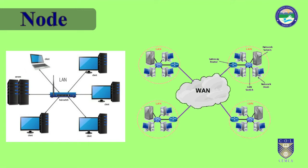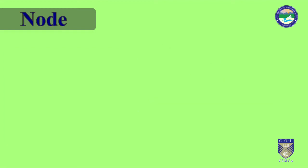Note that a hub constitutes a physical network node but does not constitute a LAN network node, since a hub network logically is a bus network. Analogously, a repeater or PSTN modem with serial interface is a physical network node but not a LAN node. If the network in question is the internet or intranet, many physical network nodes are host computers, also known as internet nodes, identified by an IP address, and all hosts are physical network nodes. However, some data link layer devices such as switches, bridges and WLAN access points do not have an IP address except sometimes for administrative purposes, and are not considered to be internet nodes or hosts, but as physical network nodes and LAN nodes.